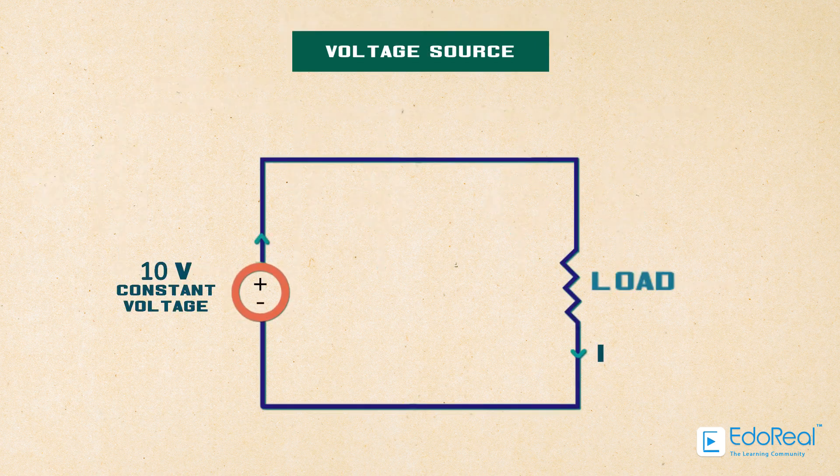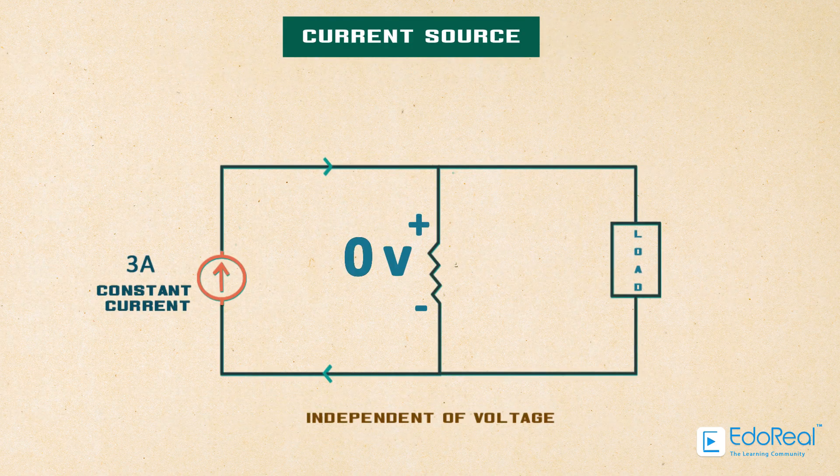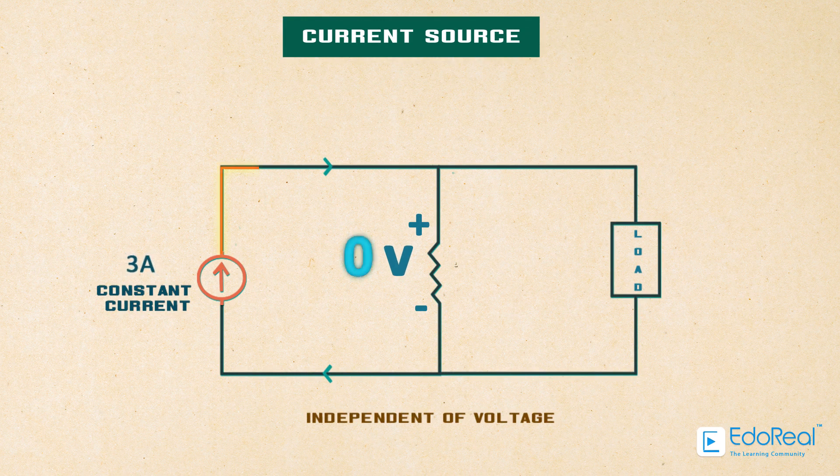A voltage source has a specified voltage across its terminals, independent of current flowing through it. A current source has a specified current through it, independent of the voltage appearing across it.